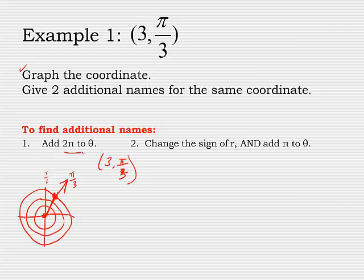First thing I would do is to add 2 pi to theta. And what that's going to do is just rotate this thing around the circle one time. It's just another name for the same angle. So I've got to add 2 pi to pi over 3. Common denominators of 3 is going to make that 6 pi over 3 plus pi over 3. So that means that angle is going to be 7 pi over 3. So another name for the same angle could be (3, 7 pi over 3).